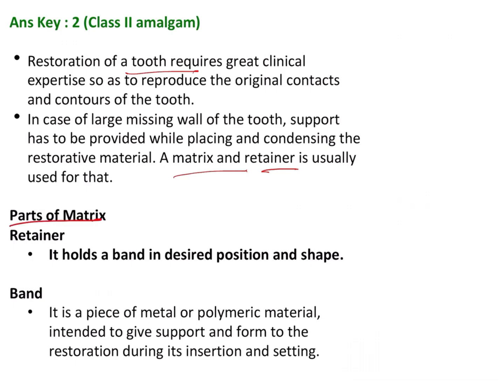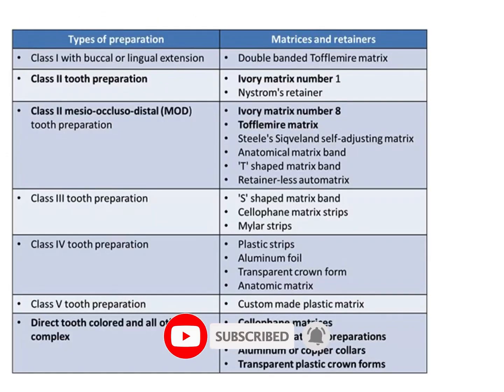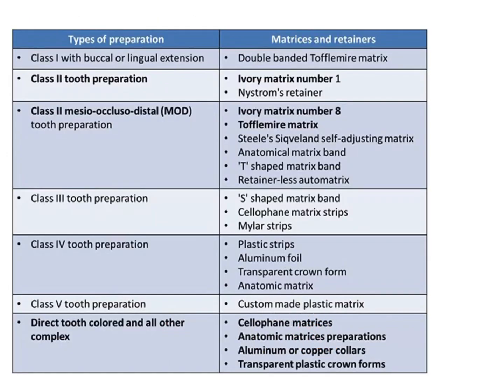The parts of a matrix system include a retainer, which is a rod-like instrument that holds the band in the desired position and shape, and a band, which can be made of metal or polymeric material.